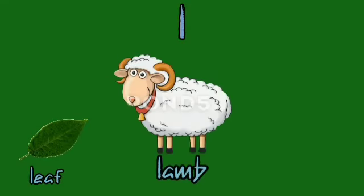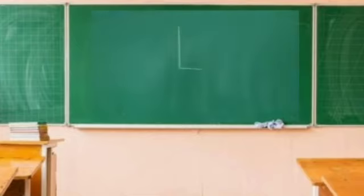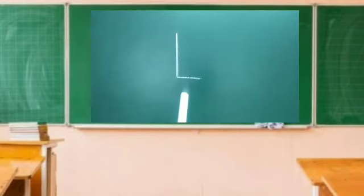Small letter L — L for leaf, L for leaf. L for lamb — lamb is a baby sheep, right? And L for lollipop, L for lollipop. So children, this is which letter? Yes, capital letter L.